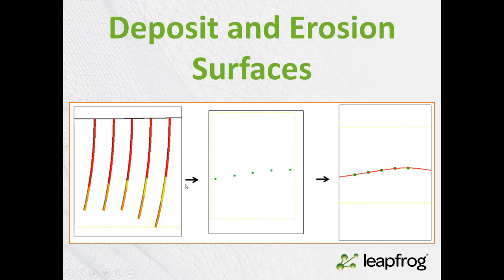For both deposit surfaces and erosion surfaces, we can take a single lithology code. In this case we'll use the red as the example, and tell LeapFrog to find the point at which the red lithology contacts either above or below against other lithologies. In this case, it contacts the orange unit twice and the yellow unit three times. LeapFrog extracts the points at these locations, and then puts the surface through the points.